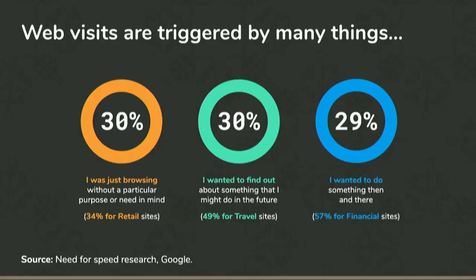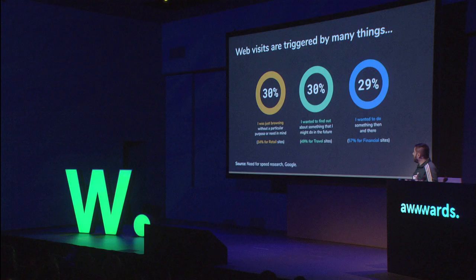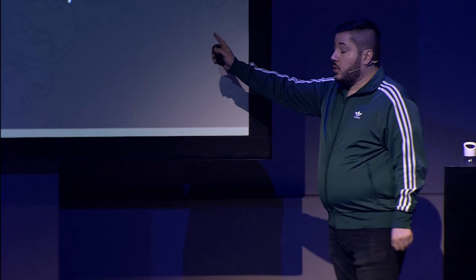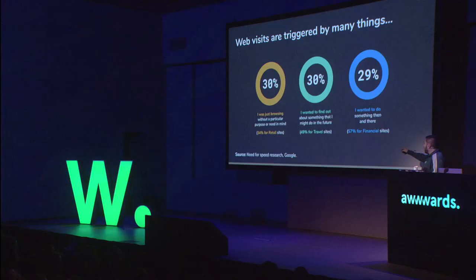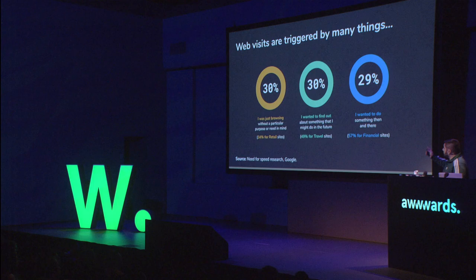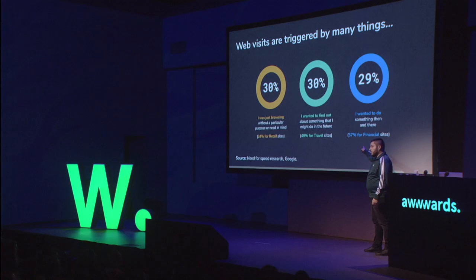On intention: 30% of users on the mobile web are just window shopping — they're at the doctor's office, bus stop, whatever. This goes up to 34% for retail sites. 30% actually want to find something out that they might do in the future — this goes up to 49% for travel sites, which makes sense. 29% of people actually want to do something then and there — this goes up to 57% for financial sites, because no one checks out insurance for a laugh. The question is, like the Financial Times, can we get people to jump from one bucket to another?